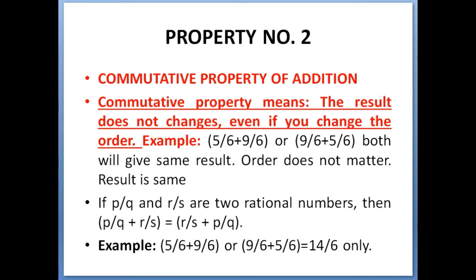Now property number two: commutative property of addition. What do you mean by commutative property? It means the result does not change even if you change the order. The result will remain the same.